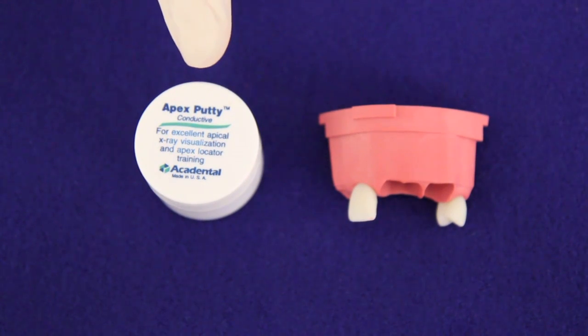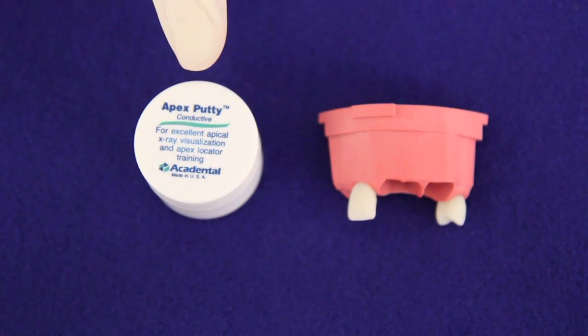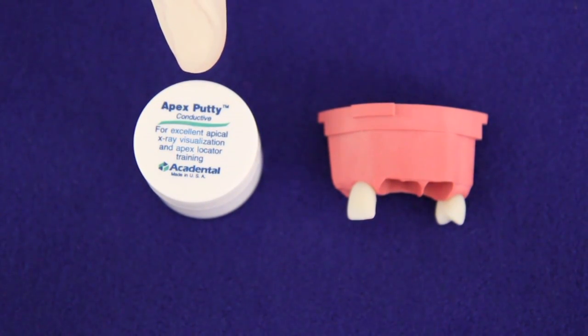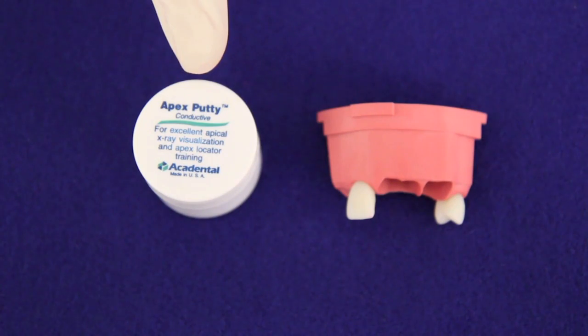Next, we use the apex putty to simulate periapical radiolucency. It's also used for another reason. It's very soft, so its placement around the apex demands that we demonstrate appropriate length control during instrumentation and obturation.